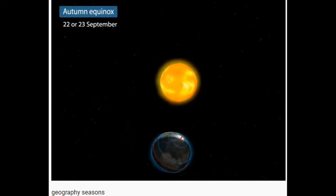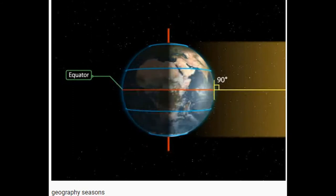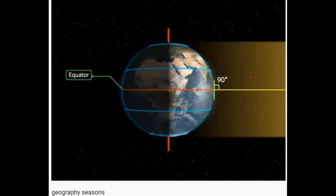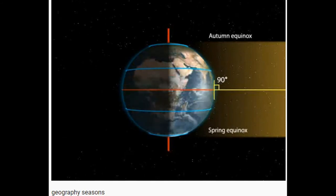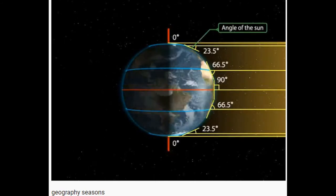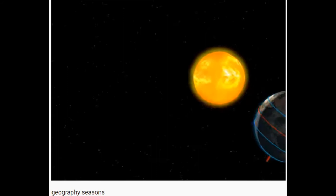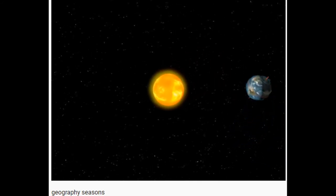Autumn equinox occurs on the 22nd or 23rd of September. The overhead sun is over the equator again, which receives the largest amount of solar radiation. The northern hemisphere is in the autumn equinox while the southern hemisphere is in the spring equinox. The angle of the sun decreases towards the poles. On this day, both hemispheres receive a similar amount of solar radiation, and the length of day and night is the same at all places on earth. After this day it is autumn in the northern hemisphere with shorter days, while the southern hemisphere enters spring with longer days.